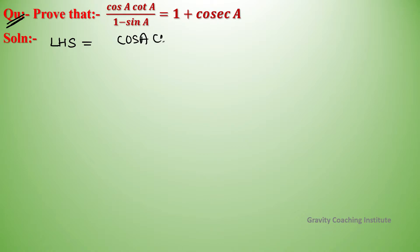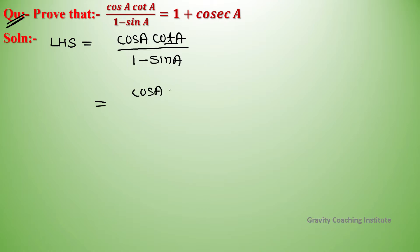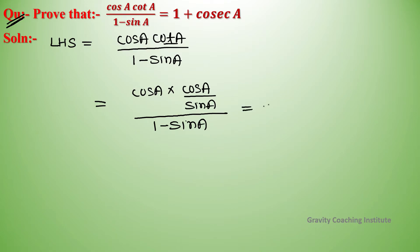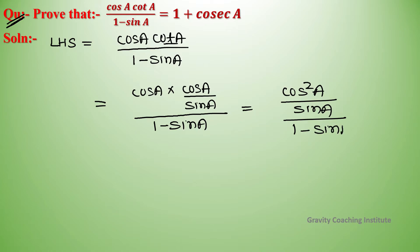Here we will change cot A into cos A upon sin A. So LHS becomes cos A into cos A upon sin A, all upon 1 minus sin A, which equals cos square A upon sin A upon 1 minus sin A.